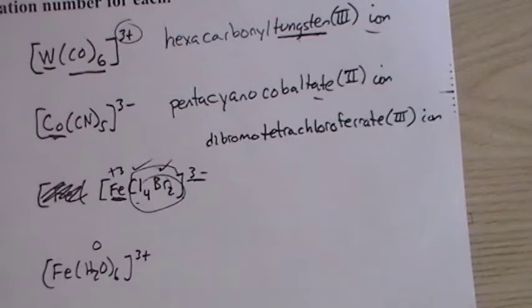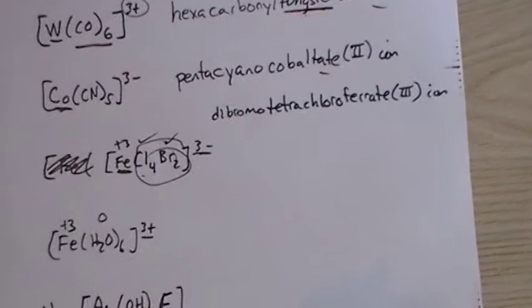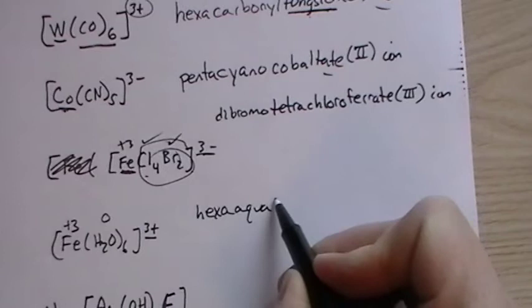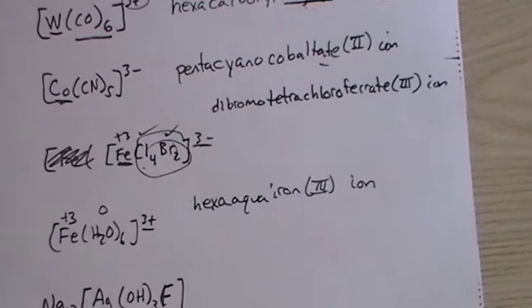Here, water has zero for its oxidation state, so this must be plus three for the iron. It's part of a cation, so we're going to leave the iron name alone. And this would be hexaaqua iron(III) ion.